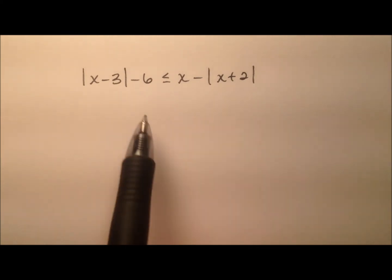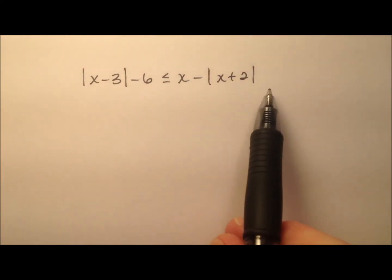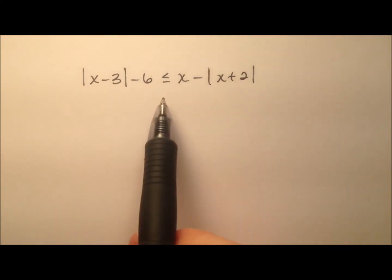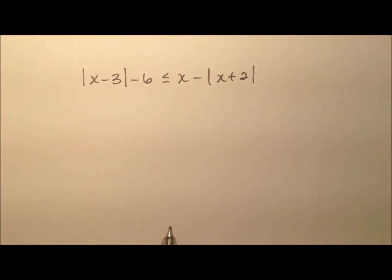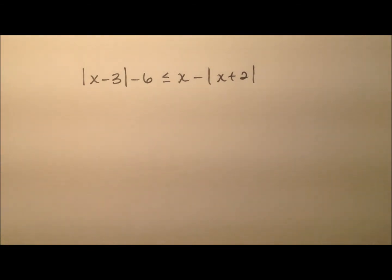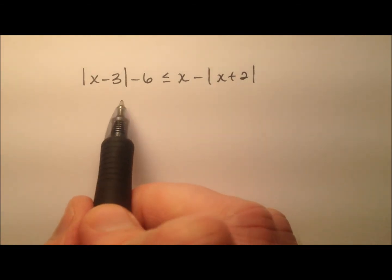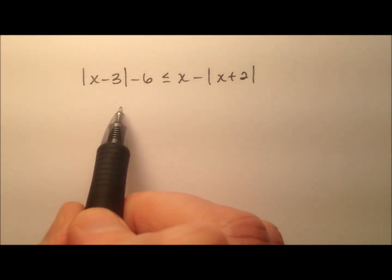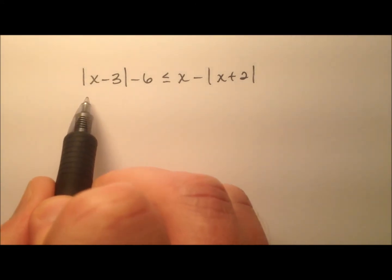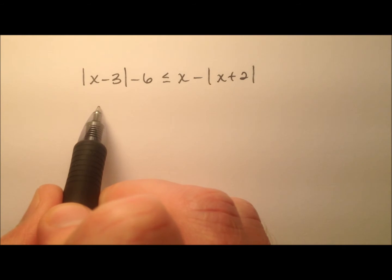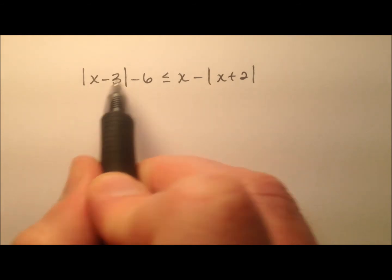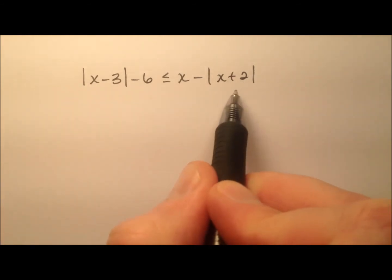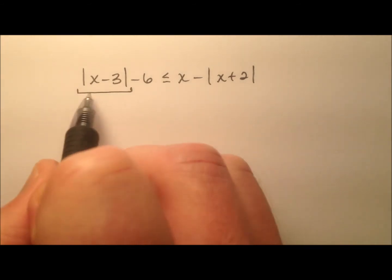In this video, I want to work through a problem and show you what it looks like in order to solve a double absolute value inequality. We'll graph it at the end. The first thing we need to do, as in any of these absolute value equations or inequalities, is to isolate the absolute value expression. The problem is we have two of them, so I just need to choose one.